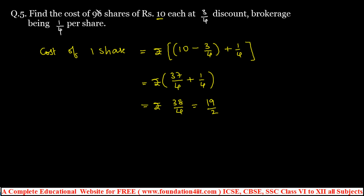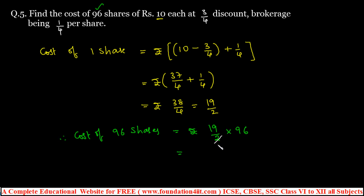We need to find the cost of 96 shares. Cost of 96 shares = 19/2 × 96 = 19 × 48 = rupees 912. So the cost of 96 shares of rupees 10 each at 3/4 discount with brokerage 1/4 is rupees 912. Discount should be subtracted and brokerage should be added.